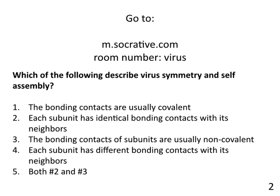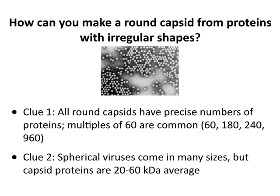The correct answer about symmetry and self-assembly is two and three. The bonding contacts are non-covalent — not covalent — because you wouldn't want to make a covalently bonded virus that can never come apart. Each subunit has identical bonding contacts with its neighbors — that is correct — and self-assembly is also correct. These are the kind of careful exam questions where if one thing is right, you have to check if something else is also right.